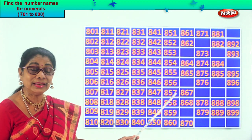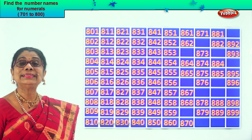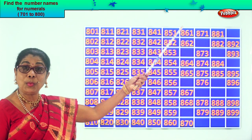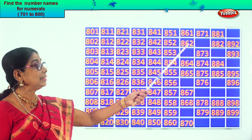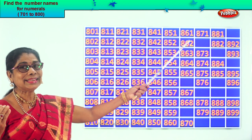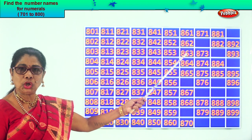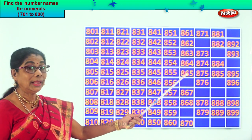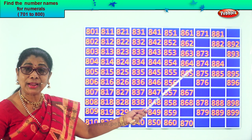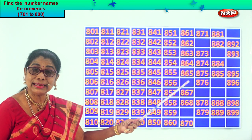858, 859, 860. After 60 comes 861, 862. After 2 comes 3 — after 62 comes 63. So the missing number is 863. Good, then 864, 865. After 5 comes 6 — after 65 comes 66. So the missing number is 866.